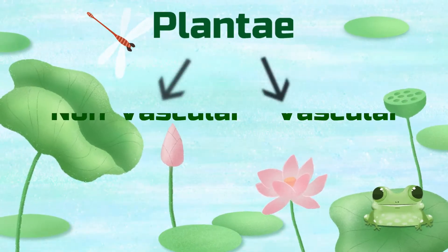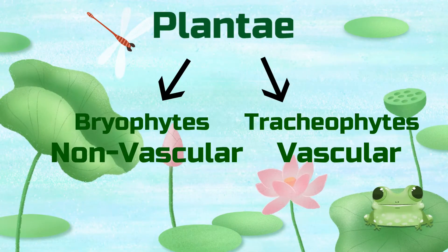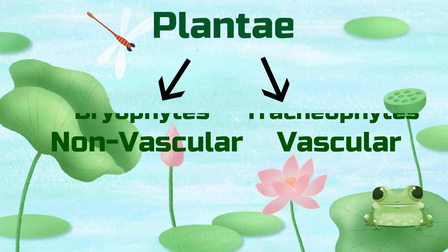Scientifically, they're called bryophytes and tracheophytes, but the common terms we use for these two classifications are vascular and non-vascular. Vascular plants include plants like grasses, flowers, ferns, shrubs, trees, and some others. Non-vascular plants usually include things like mosses, liverworts, and hornworts.